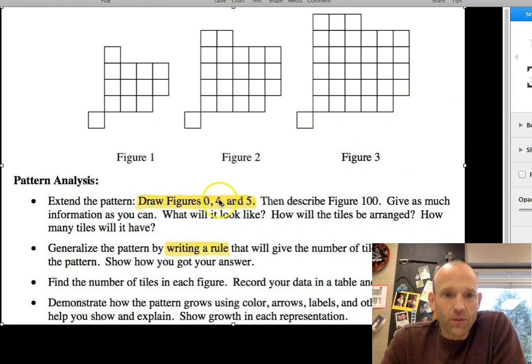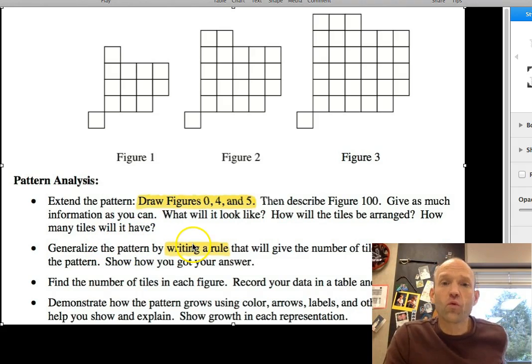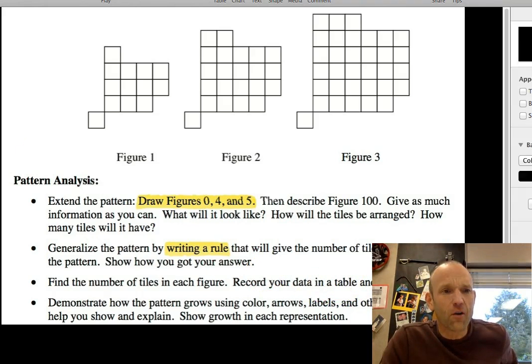That's figures 0, 4, and 5. We're going to do this in one take, so sorry about the stammering there. And then finally we're going to generalize a pattern by writing a rule, an equation. Sometimes a table will help that, and that's where we have this down here.